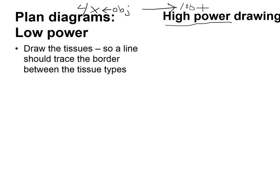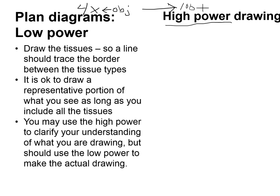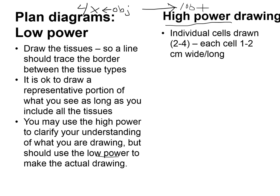For low power plan diagrams, draw the tissues — a line should trace the border between tissue types. It's okay to draw a representative portion of what you see, as long as you include all the tissues. That means you don't have to spend 30 minutes drawing every single detail, especially if it's repetitive. You may use the high power to clarify your understanding of what you're drawing — if it's not clear on low power, zoom in with high power and then zoom back out. Use the low power to make the actual drawing.